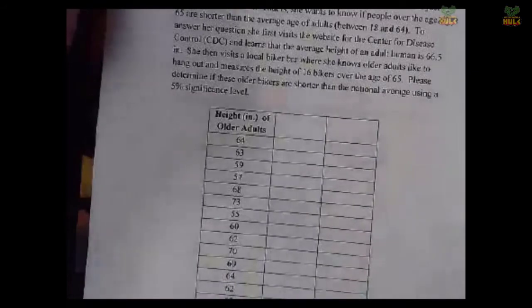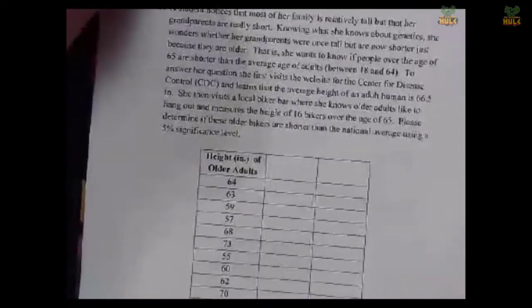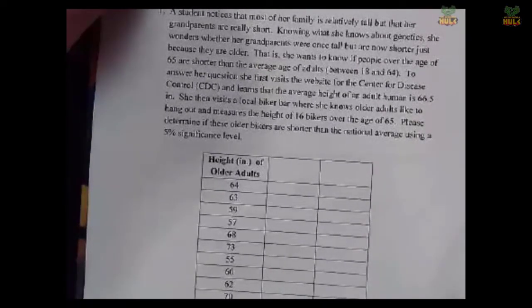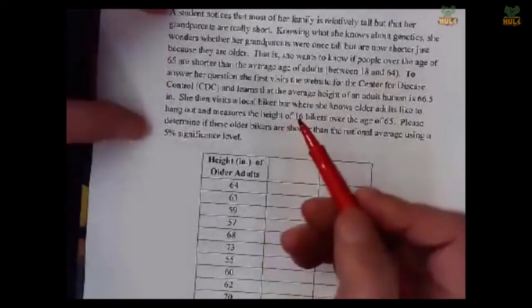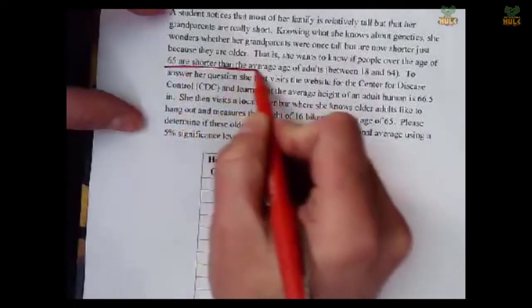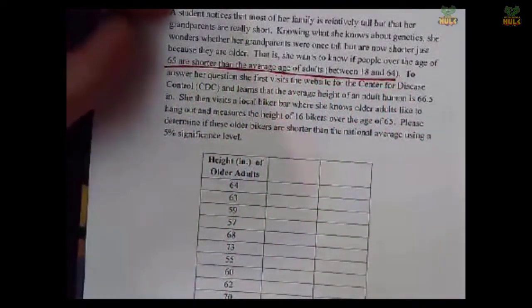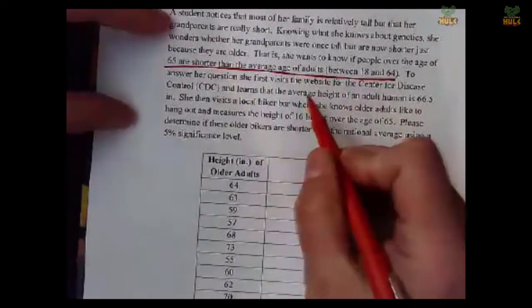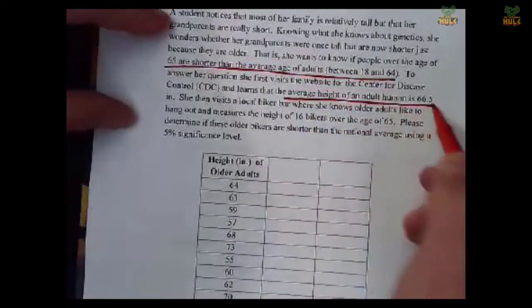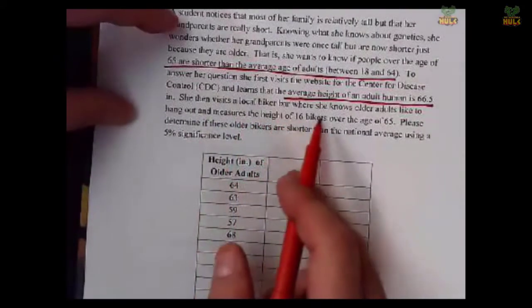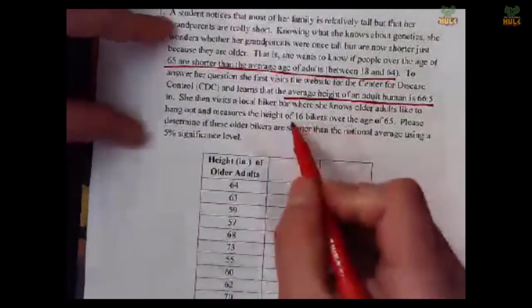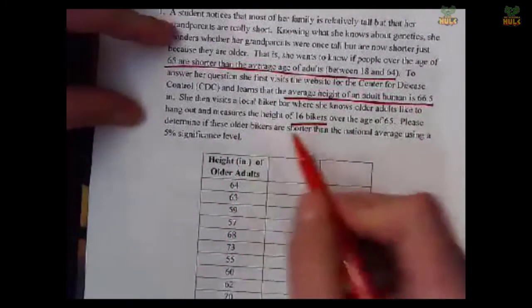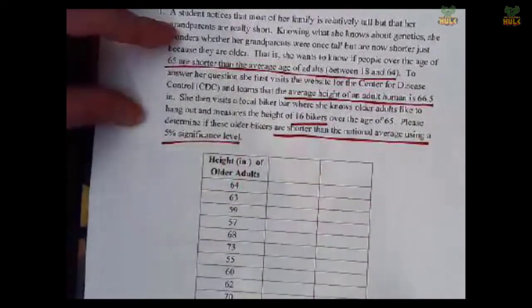So let's read the example first to figure out what we're in for. A student notices that most of her family is relatively tall, but that her grandparents are really short. Knowing what she knows about genetics, she wonders whether her grandparents were once tall, but are now shorter just because they are older. That is, she wants to know if people over the age of 65 are shorter than the average of adults between 18 and 64. So that's her prediction. We can say that right there. She wants to know if people over the age of 65 are shorter. To answer her question, she first visits the website for the CDC and learns that the average height of an adult human is 66.5. She then visits a local biker bar where she knows older adults like to hang out and measures the height of 16 bikers over the age of 65.